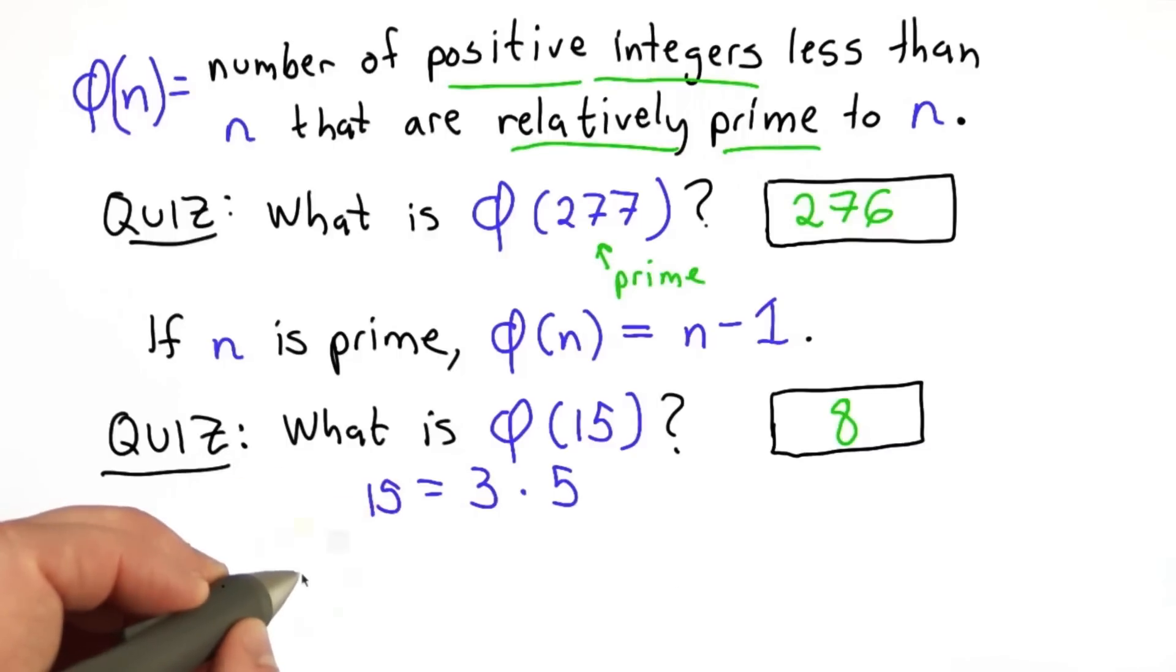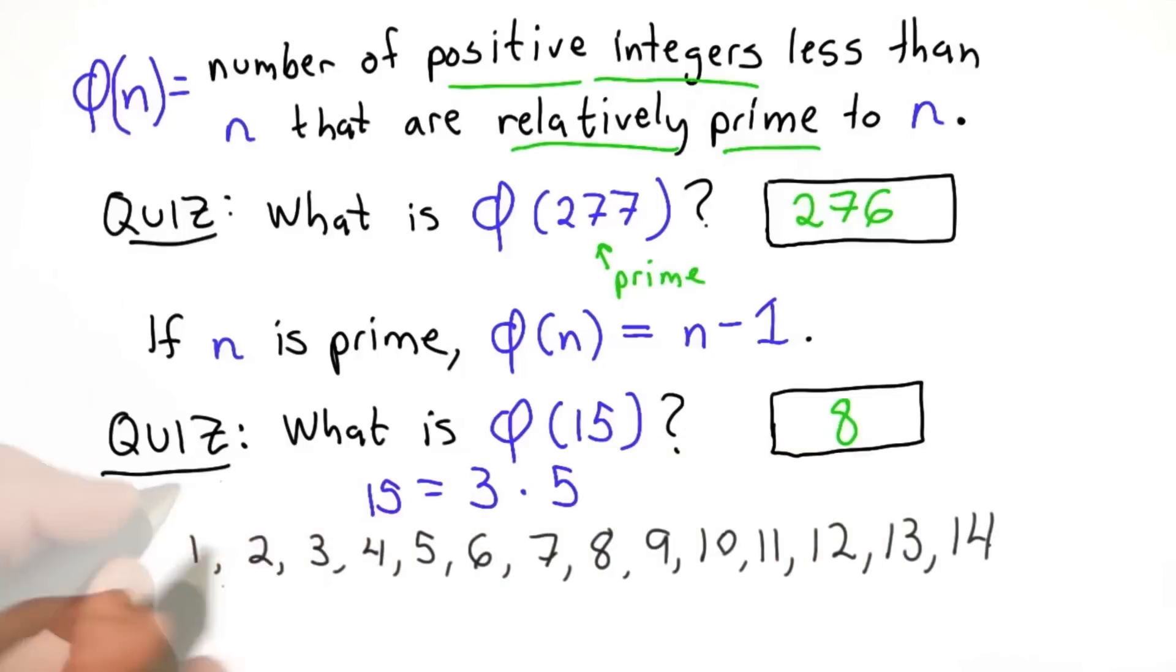If we look at the numbers from 1 to 14, these are all the positive integers less than n. We want to figure out how many of these are relatively prime.